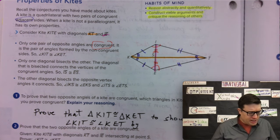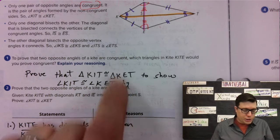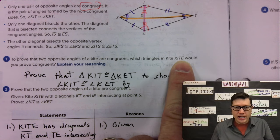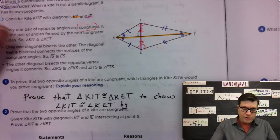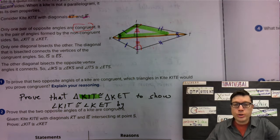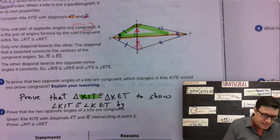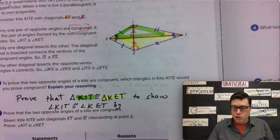To prove that two opposite angles of a kite are congruent, which triangles in KITE would you prove congruent? Honestly, I would show that the top triangle, boom, boom, boom, is congruent to the bottom triangle, KET. Those two triangles need to be shown congruent.